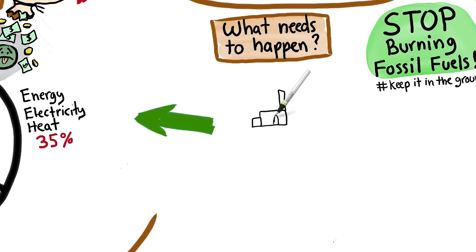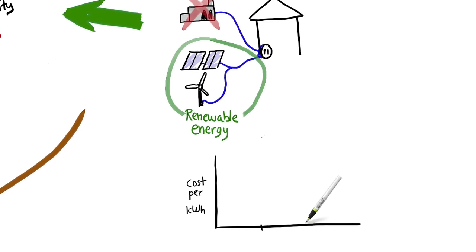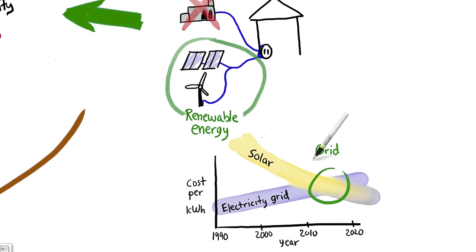Instead of coal and oil, we can use solar panels and wind turbines to generate the same electricity without screwing up the climate. This used to be expensive and ineffective, but the technology has finally caught up. Now solar and wind is often more cost effective than coal and oil, even without taking climate impact into account. That's known as grid parity, a crucial economic tipping point where people who don't even know or care about climate change will want to switch because it's cheaper.